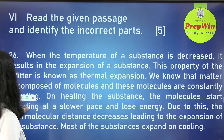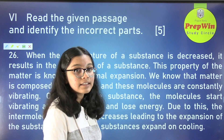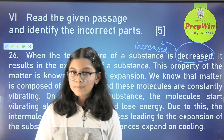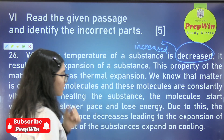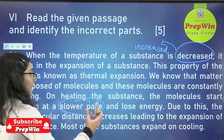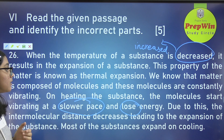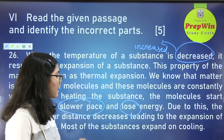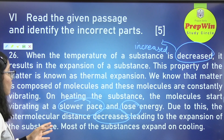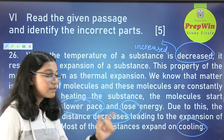The last question: identify the incorrect words in the passage. The first incorrect word is 'decreased' — if the temperature of a substance increases, it results in expansion. The second incorrect words are 'slower pace' and 'lose energy' — molecules vibrate at a faster pace and gain energy. The intermolecular distance decreases. Also, 'cooling' is incorrect — most substances expand on heating, not cooling. A substance expands on heating and contracts on cooling.